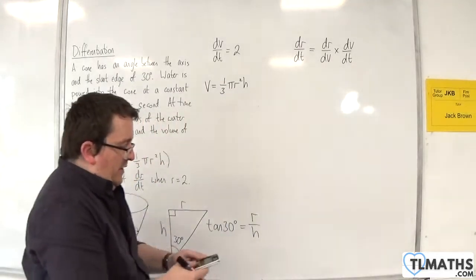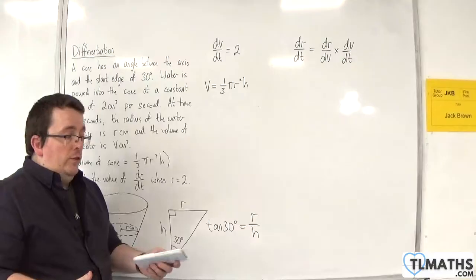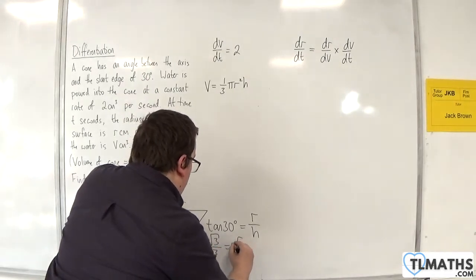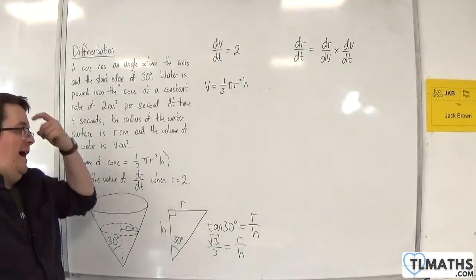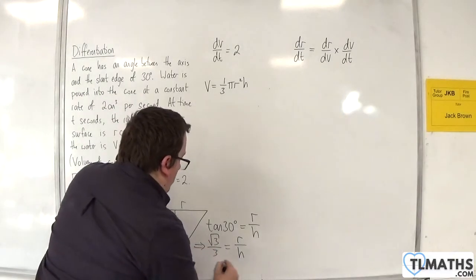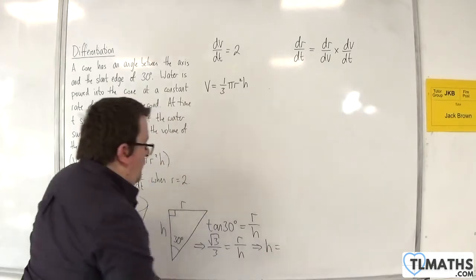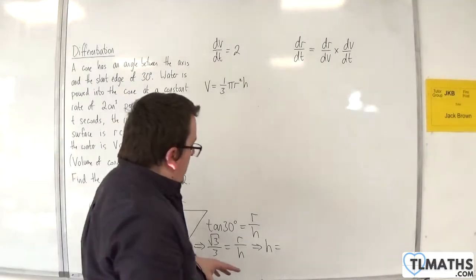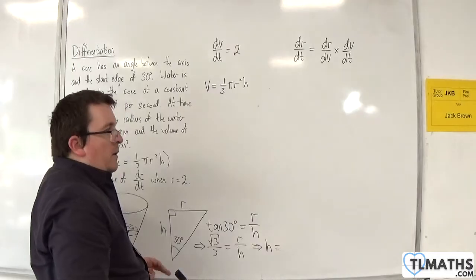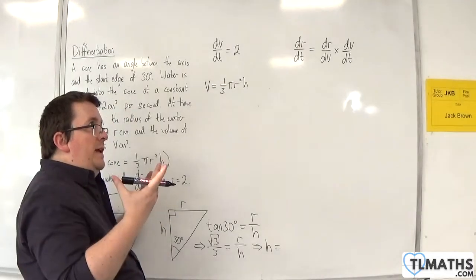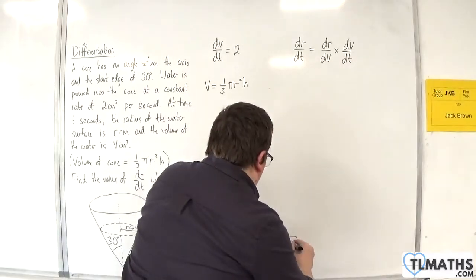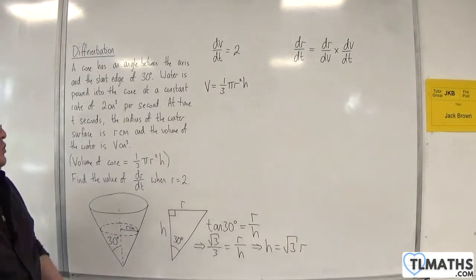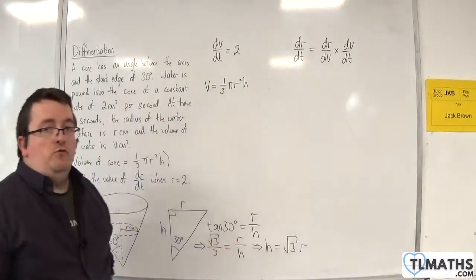What is tan of 30? Tan of 30 degrees is root 3 over 3. So root 3 over 3 is r over h. I want to get h equals. If I divide both sides by the root 3 over 3 and multiply both sides by h, one over root 3 over 3 is 3 over root 3, which is just going to be root 3. So that's root 3 r. So h is equal to root 3 times r.